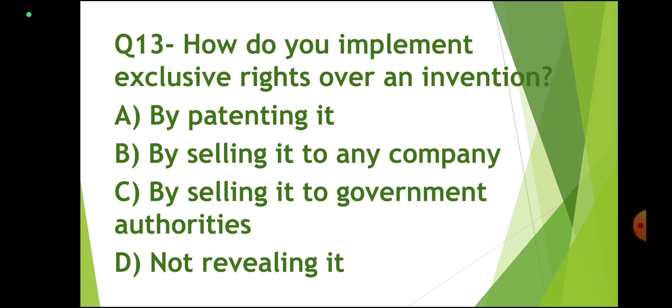Question number 13: How do you implement exclusive rights over an invention? Options: By patenting it; By selling it to any company; By selling it to government authorities; Not revolving it. Correct answer: By patenting it. Option A is correct.